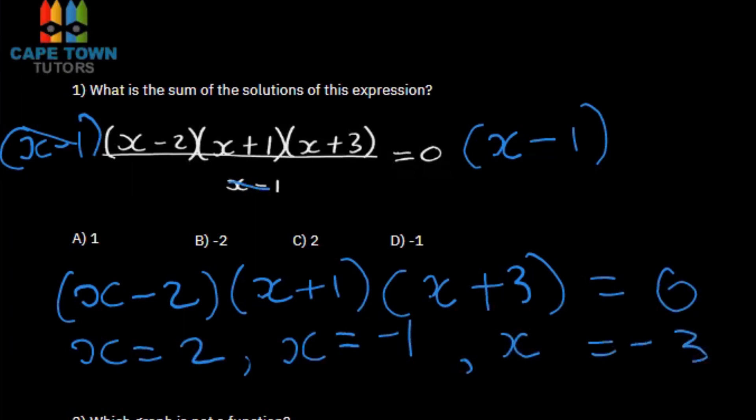Since it said we need to find the sum of the solutions, we'll add up our solutions. So it'll be 2 plus minus 1, which is minus 1, plus minus 3. So 2 minus 1 is positive 1, minus 3, negative 2. And so the answer for that question would be B.